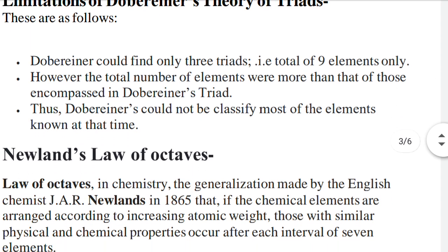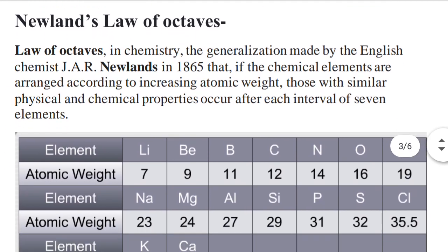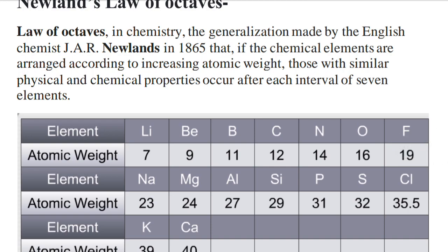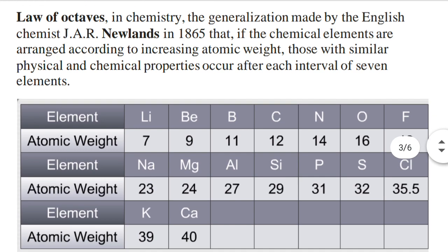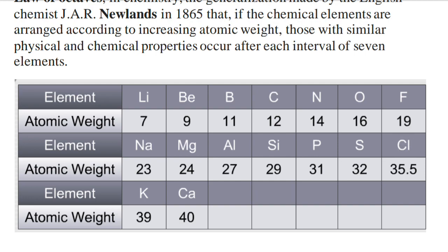After this came Newlands' Law of Octaves — a generalization made by English chemist J.R. Newlands in 1865. He stated that if chemical elements are arranged according to increasing atomic weight, those with similar physical and chemical properties recur after each interval of seven elements.